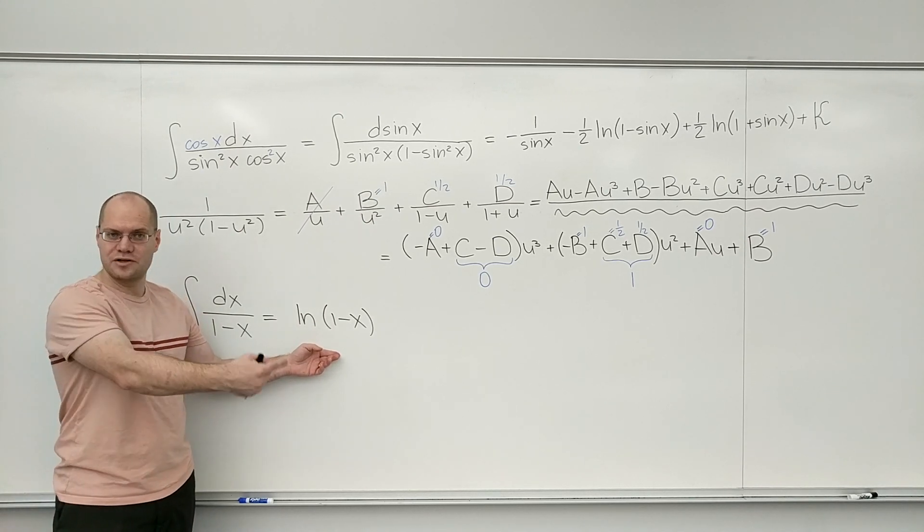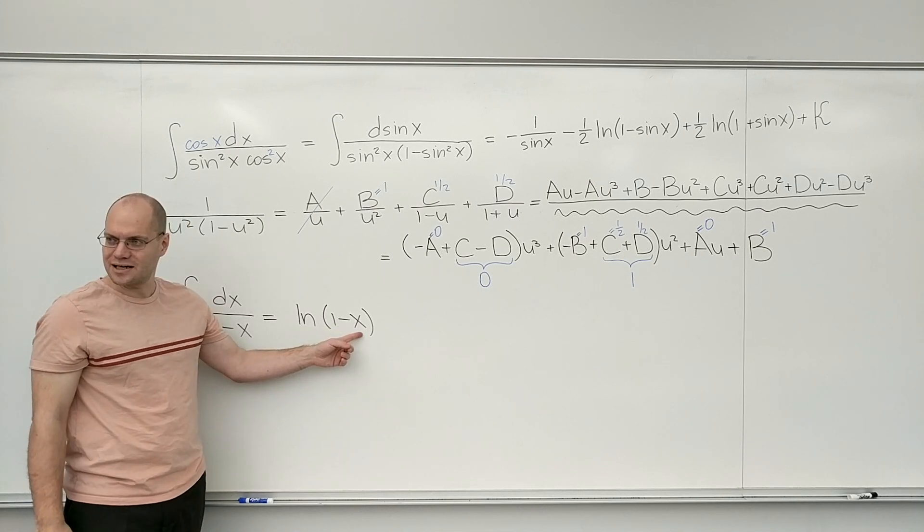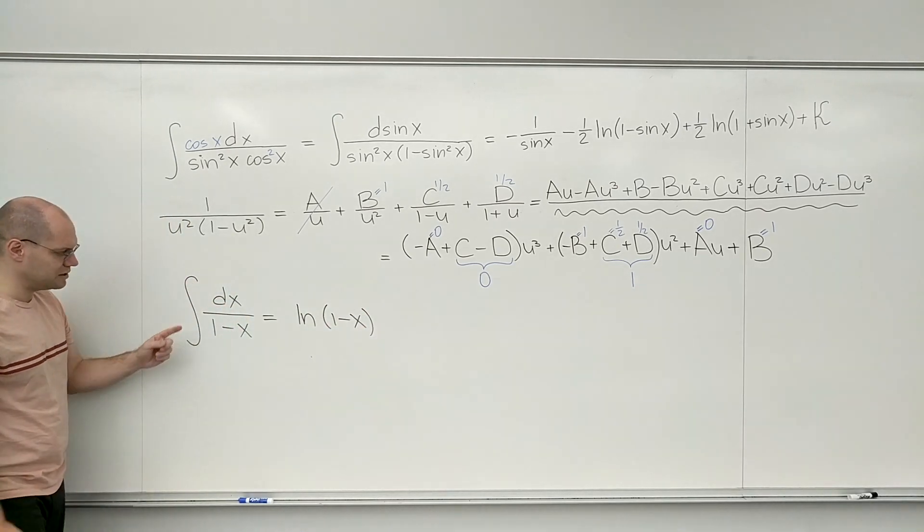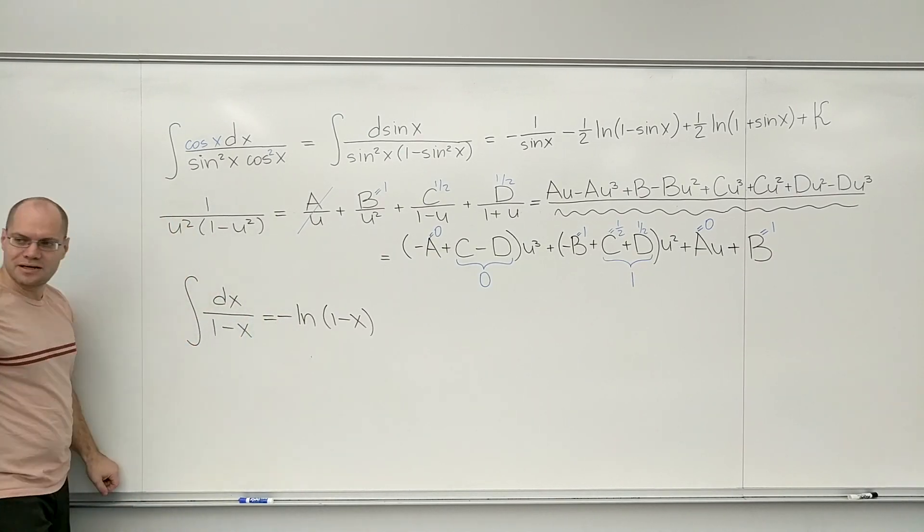Times the derivative, rolling with the chain rule, of 1 minus X. And that's minus 1. And that's the minus 1 we don't have here, so it has to be minus 1.